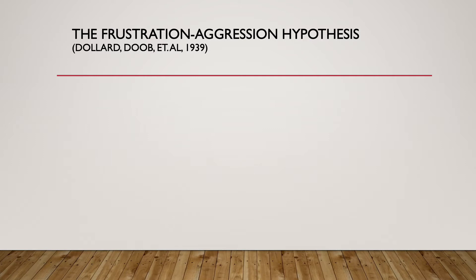Let's begin with the frustration-aggression hypothesis. In social psychological years, this theory is almost prehistoric — it goes all the way back to 1939, and it was originated by a psychologist by the name of John Dollard. It went through many revisions throughout the years with a variety of different colleagues. But the original frustration-aggression hypothesis, the very first version that was proposed, was quite simple.